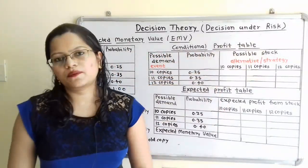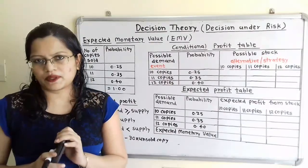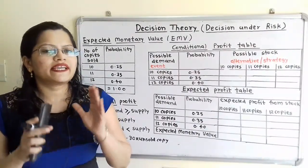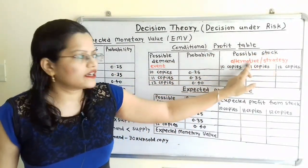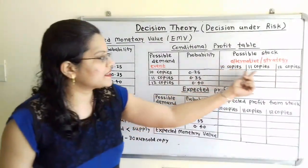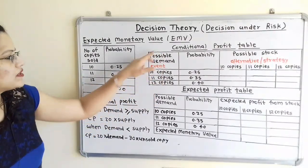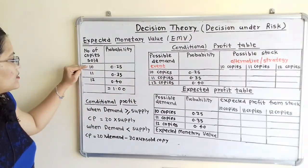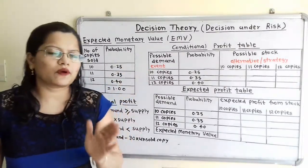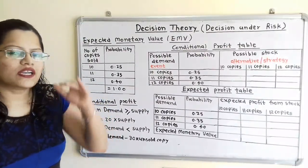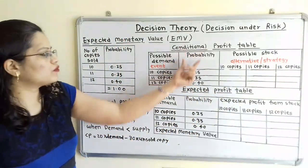We will now make the conditional profit table. The question asks how many copies should be ordered, meaning how many to keep in stock. The possible stock levels are the alternatives or strategies. For these three alternatives we decide the best for highest profit. The possible demand — 10, 11, and 12 — is the event or condition. Alternatives are also 10 copies, 11 copies, and 12 copies. We also mention the probability.